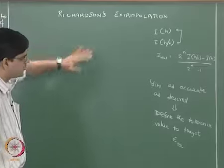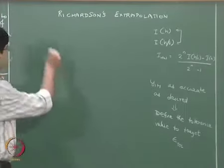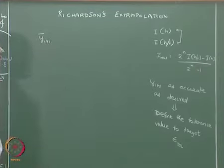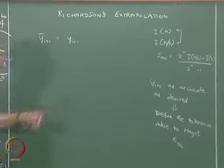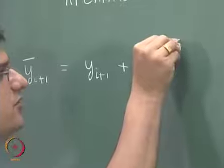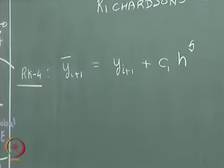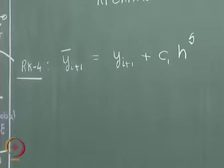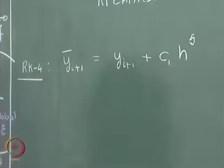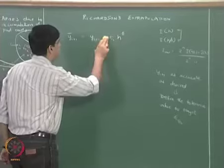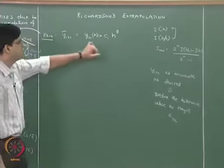In Richardson's extrapolation, the true value y(i+1) bar equals y(i+1) computed numerically plus some constant c1 multiplied by h to the power 5, for the RK4 method. I have rewritten this equation: the true value y(i+1) bar equals y(i+1)(h) plus c1*h^5. I will write this in bracket notation as y(i+1)(h) plus c1*h^5, using the RK4 method.